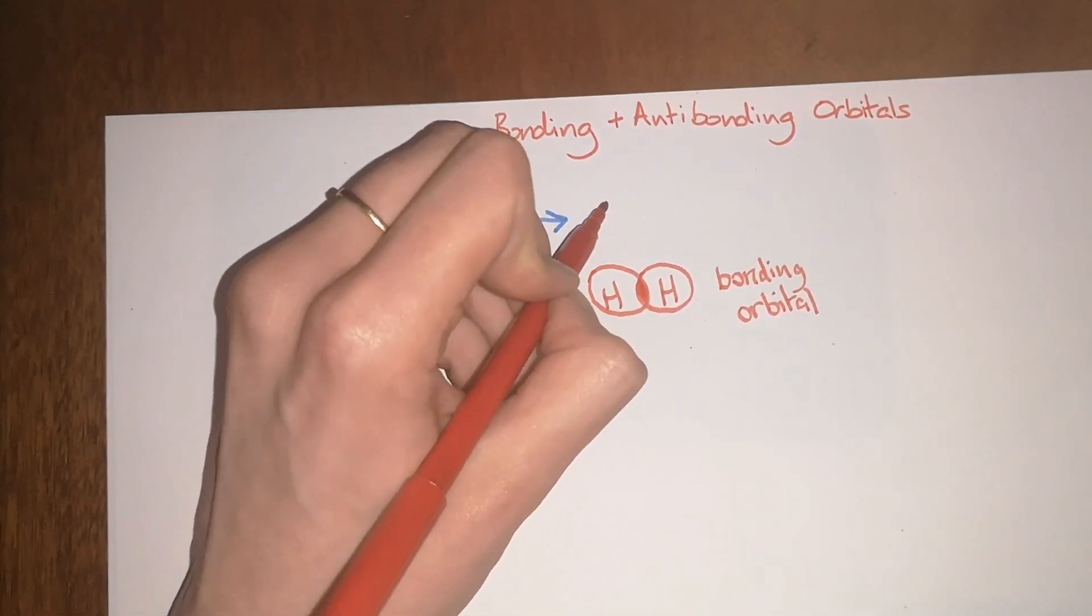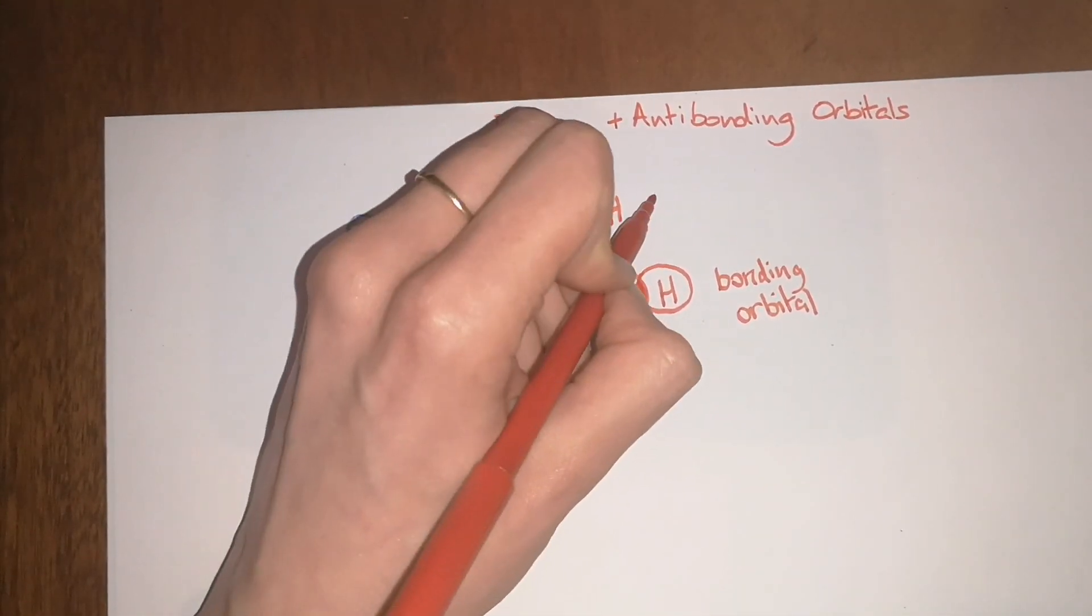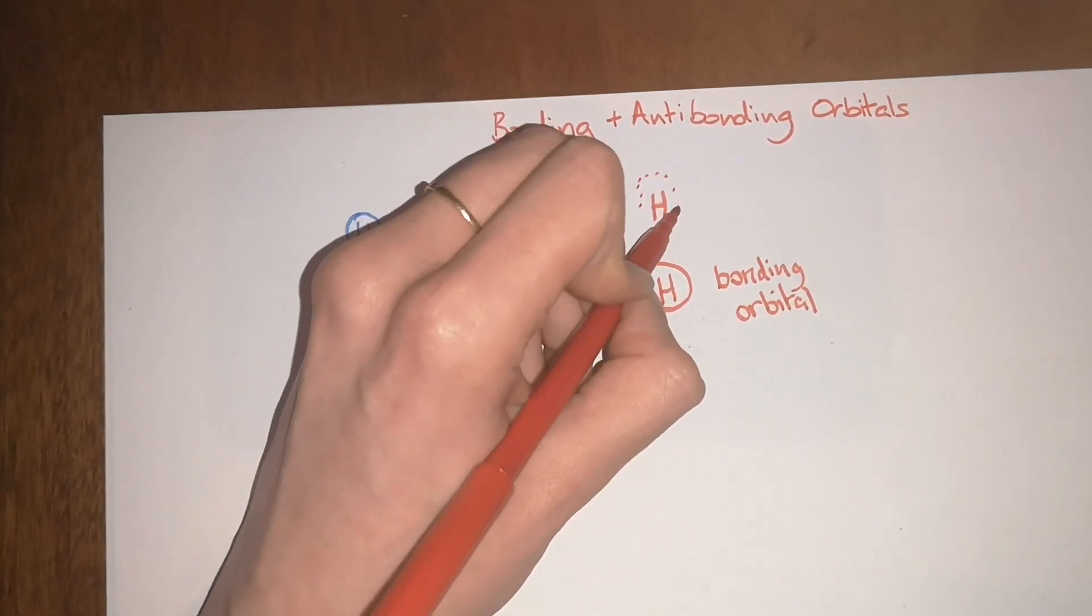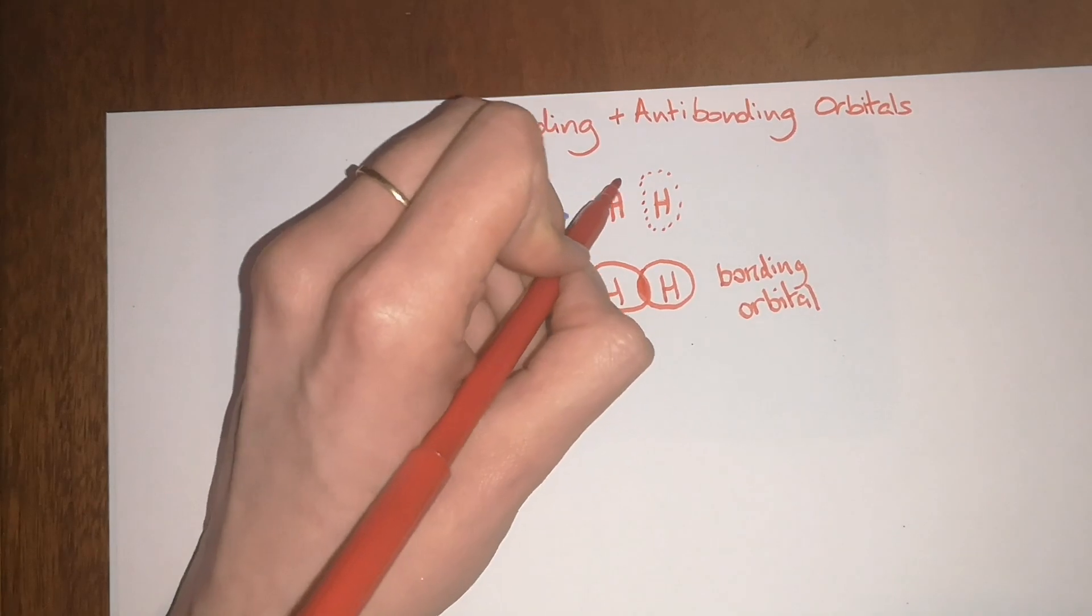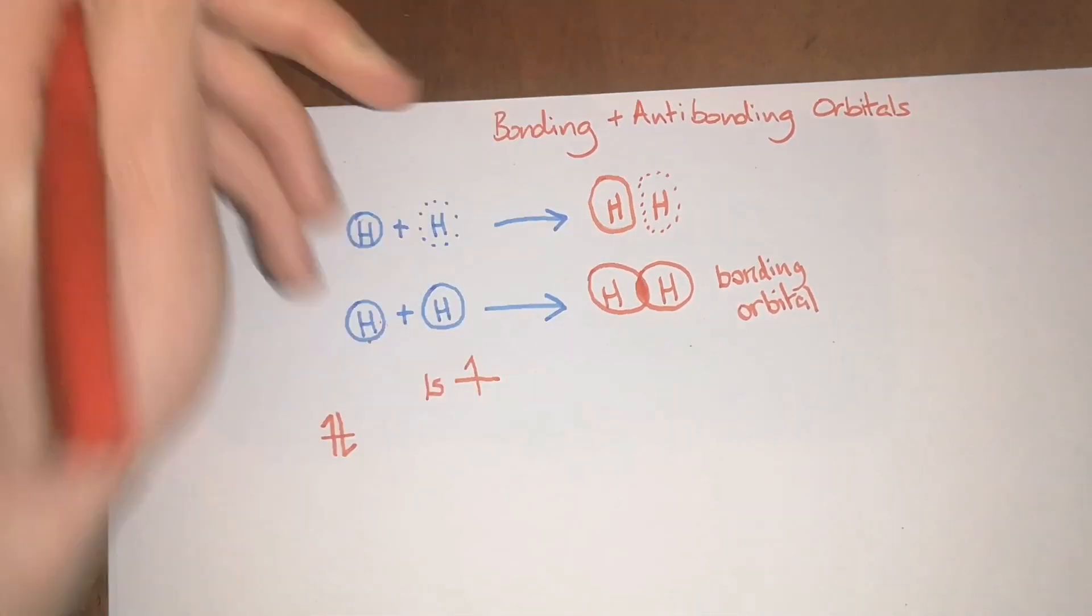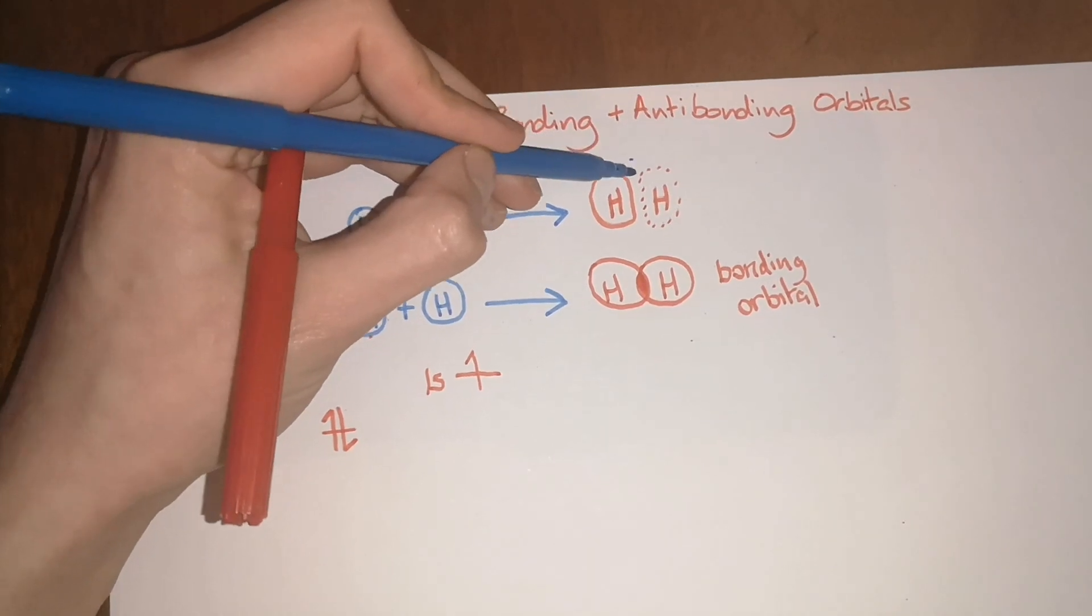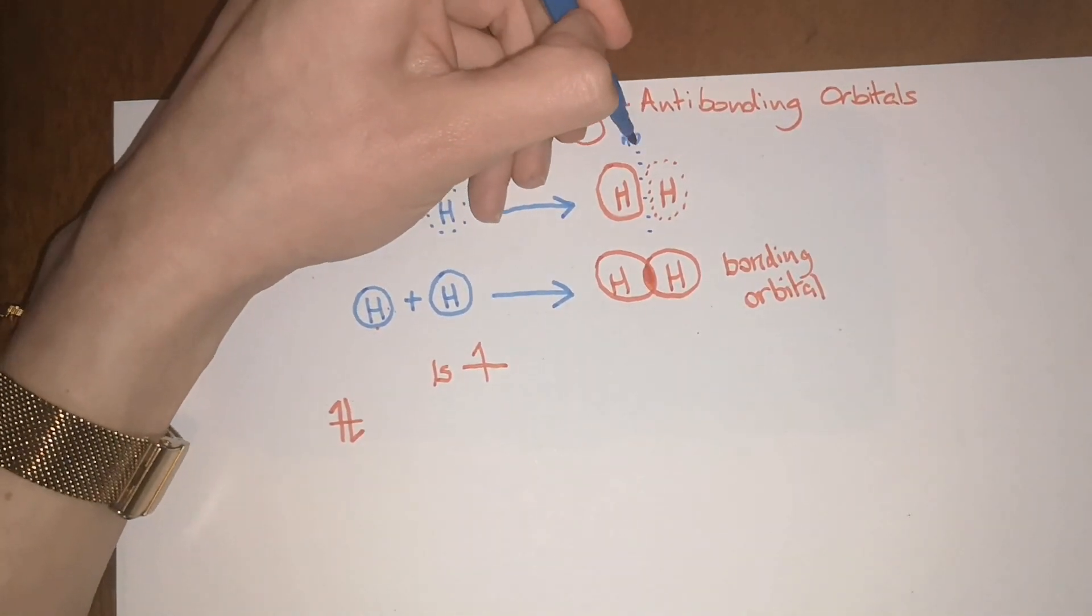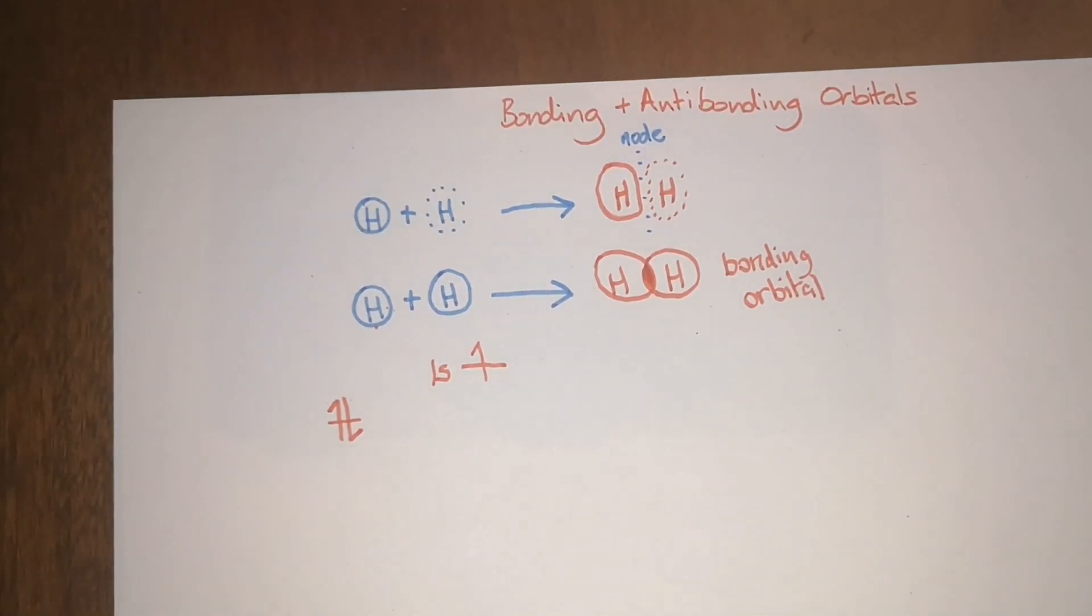What ends up happening is, even though they come close together, you get a node. What I mean by a node is that the orbitals will actually change shape—they're not perfectly spherical anymore—and now there's this space in the middle that has no electrons in it. This is called the node.